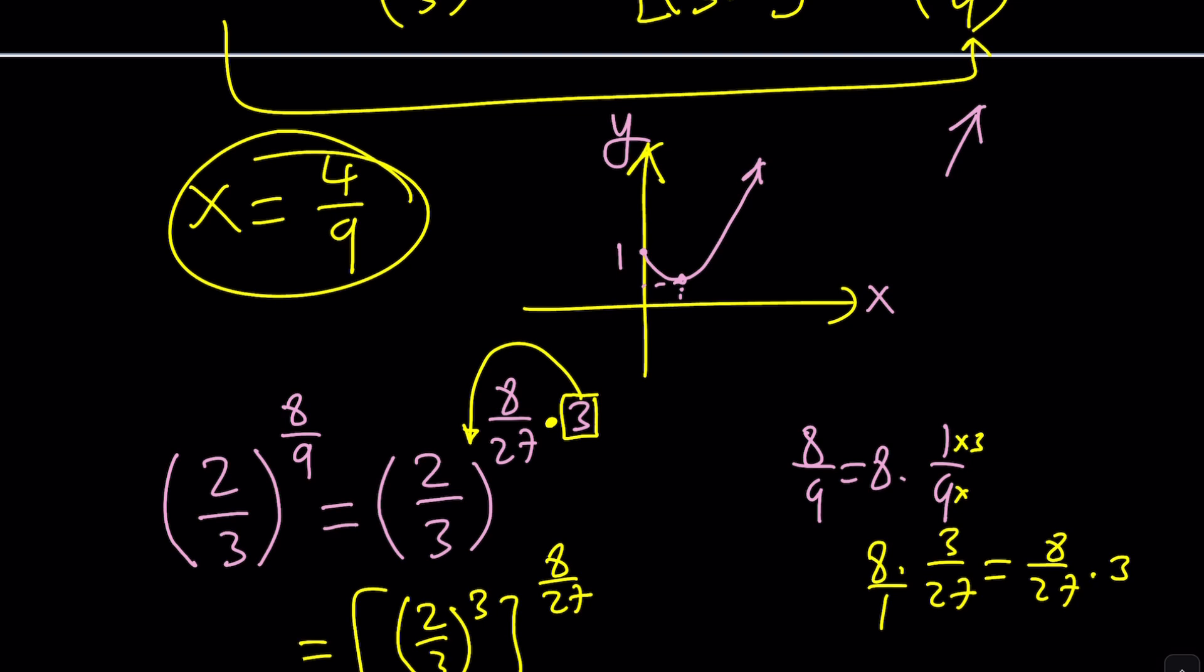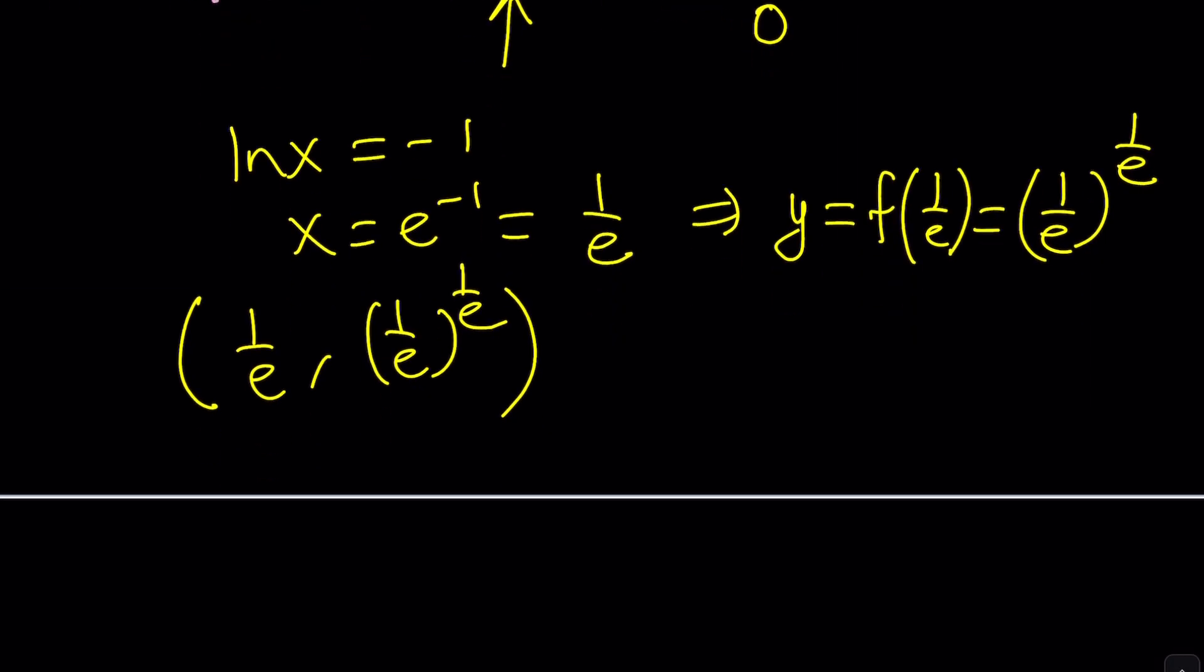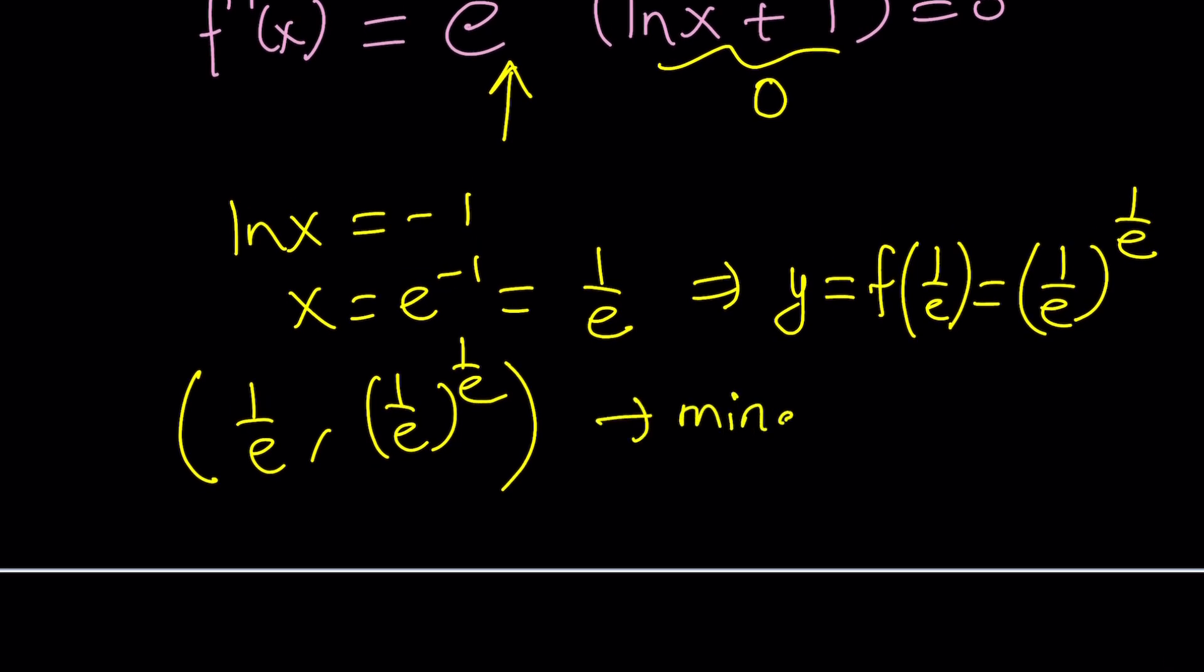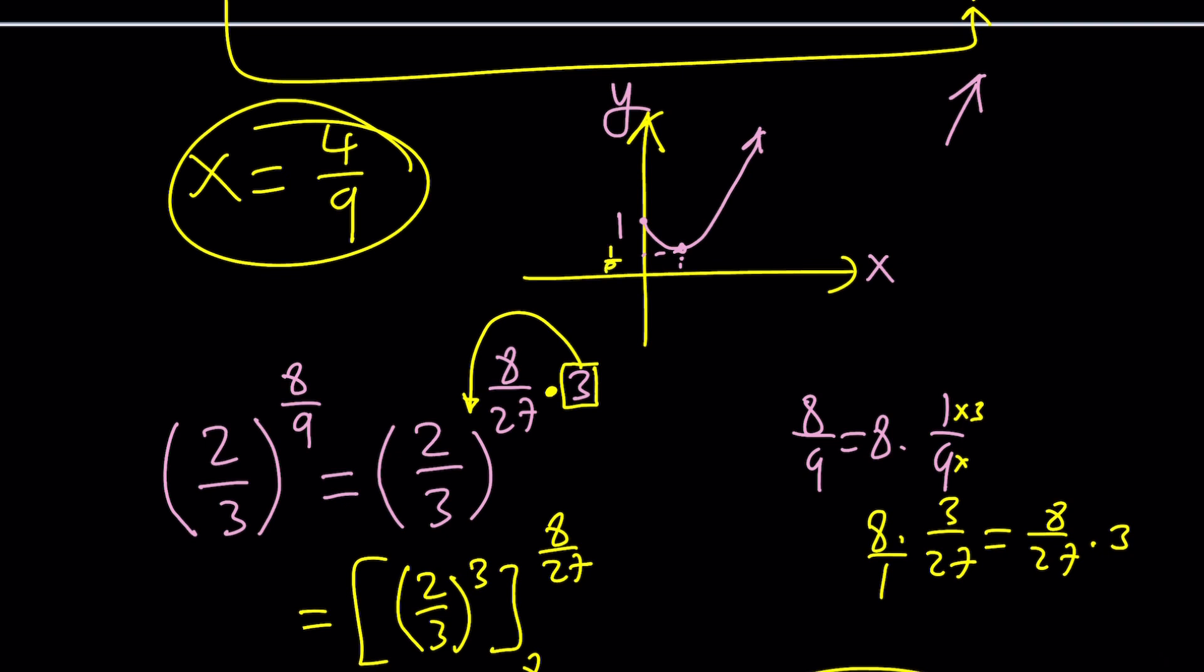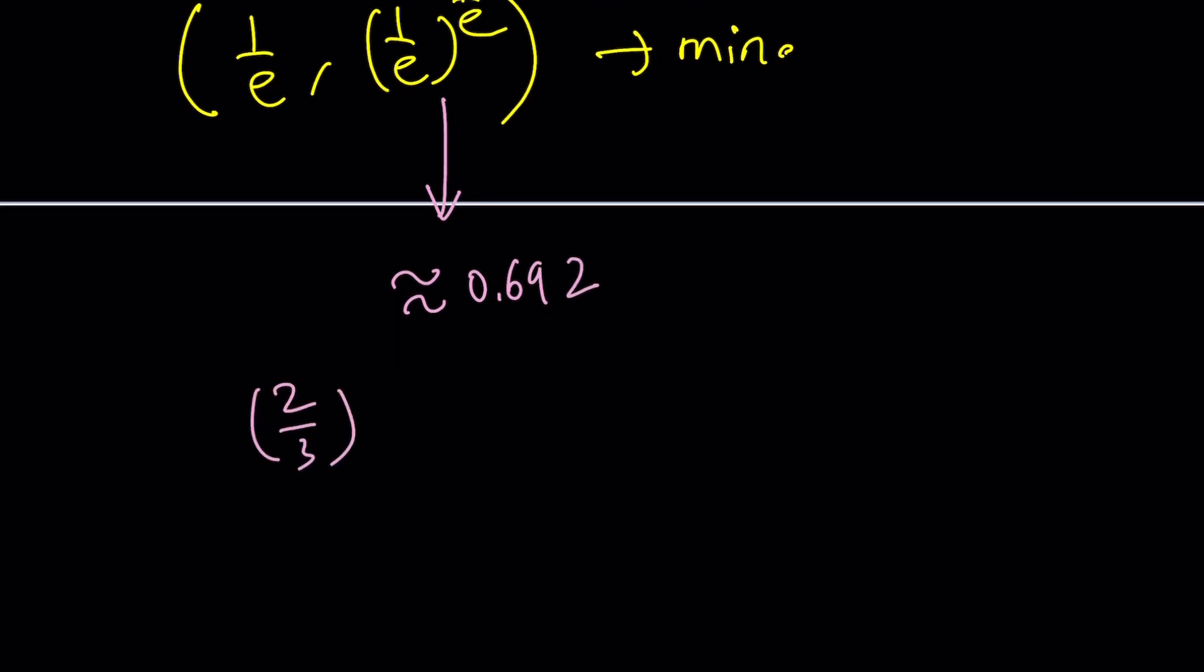You know why? Because this function doesn't have a maximum, right? Especially a local max we don't have. So we don't have an absolute max either, but we have a minimum. So this is a minimum, which means what? Here's the thing. If your y value, and by the way, this is 1 over e to the power of 1 over e, I hope you can see that. It's kind of small. And this is 1 over e. So if your y value is greater than that, but less than 1, you're going to have two intersection points. So let me give you the values. What is 1 over e to the power of 1 over e? 1 over e to the 1 over e is actually approximately 0.692. What about 2/3 to the power of 8/9? Or 4/9 to the power of 4/9, however you're going to write it. It is approximately 0.697. Awesome.